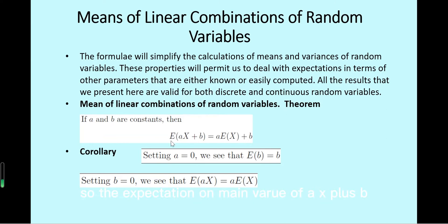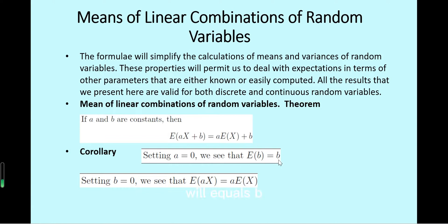The expectation or mean value of ax plus b equals a times the mean value of x plus b. If we set a equals zero, the expectation of a constant b will equal b. And if we set b equals zero, then the expectation of a times x equals a times the expectation of x.